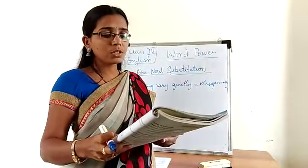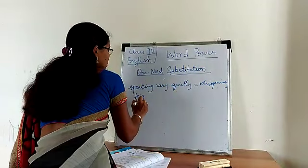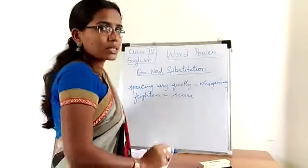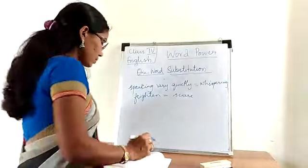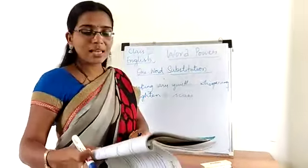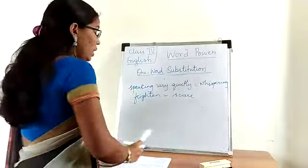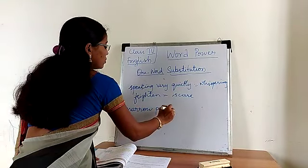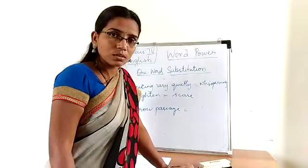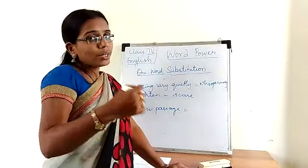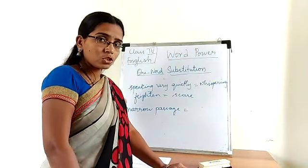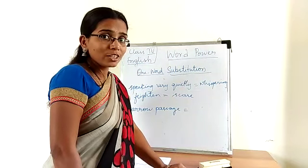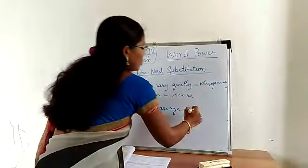The next sentence: can you tell me two things that frighten you? What is frightened? This also you have in your new words. Scared — you can replace frightened with scared. Next: Somia narrated a story as she led Rahul along a narrow passage in the building. Narrow passage — corridor is nothing but a narrow passage.